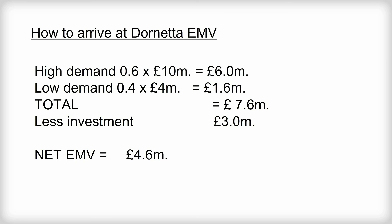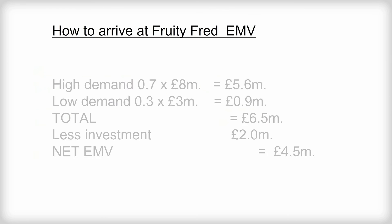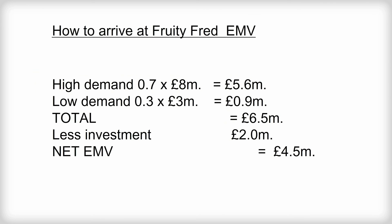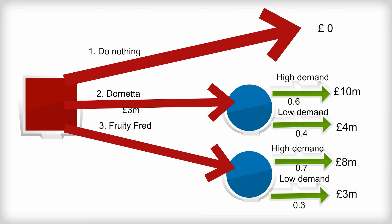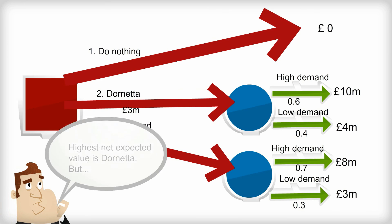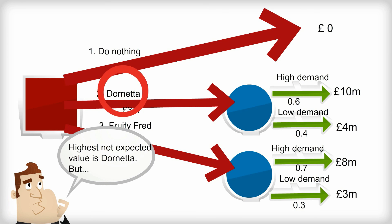The EMV for option one (Dornetta) and the EMV for option two (Fruity Fred) can now be compared. Purely on the basis of the decision tree, Dornetta seems the best way forward for the business. But in reality, there may well be other factors that will influence the final decision.